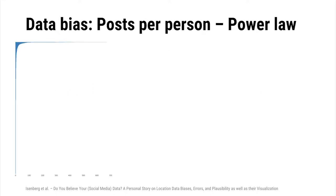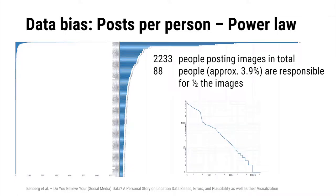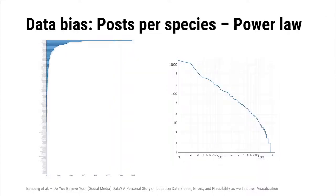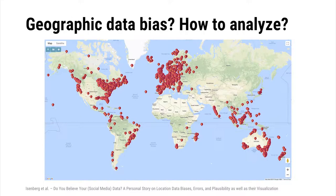The first bias is immediately obvious: the number of pictures per person is not even. There is in fact a power law distribution where very few people post most of the images. The same is true for the number of pictures per species — some species get a lot of posts, while most species get very few.